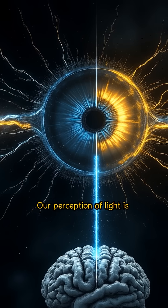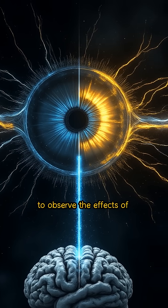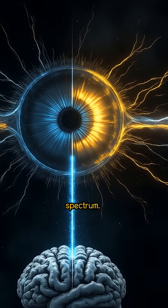Our perception of light is limited by the processing speed of the nervous system. Refraction through a prism allows us to observe the effects of light, creating a visible spectrum.